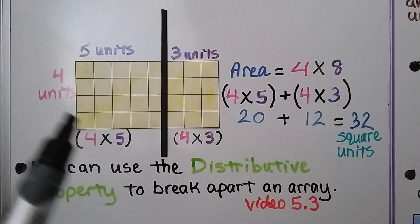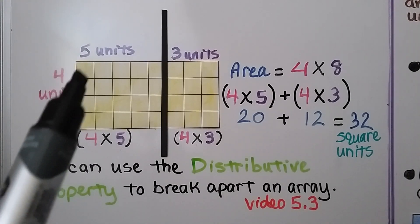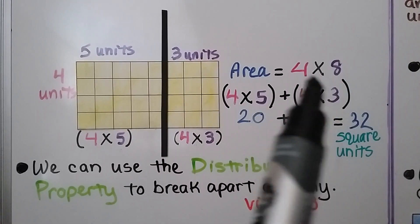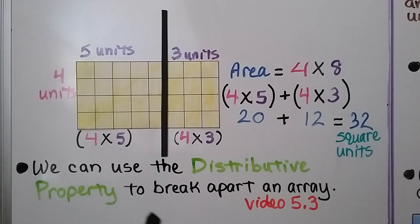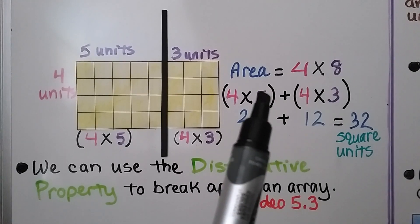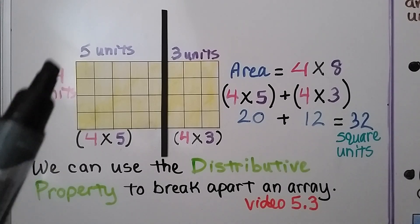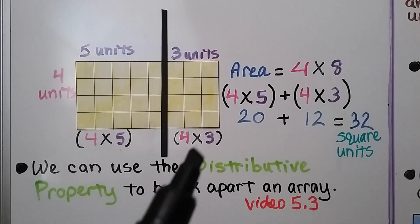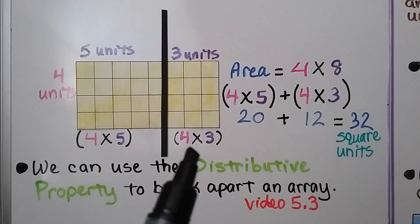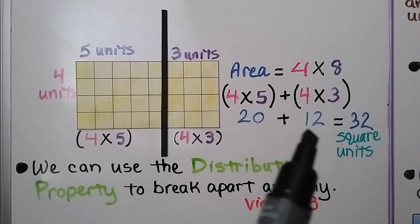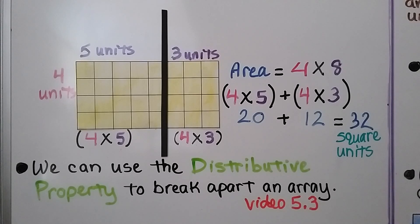Here we have a yellow rectangle — it's four units in length and eight units in width, so that's four times eight. We can use the distributive property to break apart an array, which we learned back in video 5.3 (linked in the description). We take the eight and break it apart into a five and a three: five units and three units. Now we have four times five and four times three.